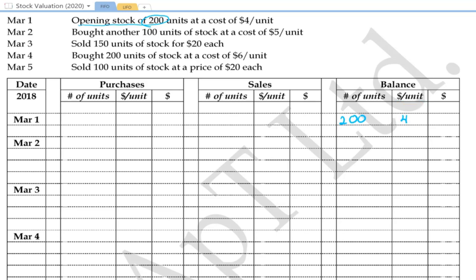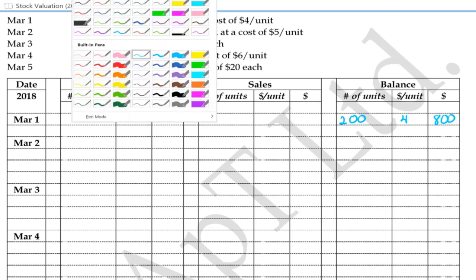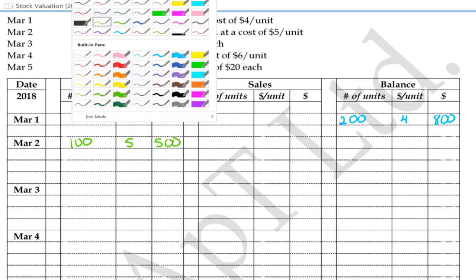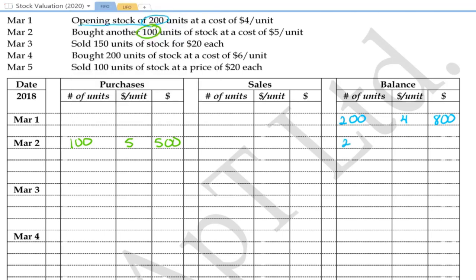On the 2nd of March, we bought another 100 units at a cost of $5 per unit, which means we spent a total of $500. When we come to the balance, we have 200 units from the blue batch at $4 each giving us $800, and a new green batch of 100 units each valued at $5 per unit giving us $500.